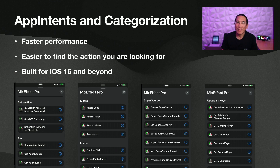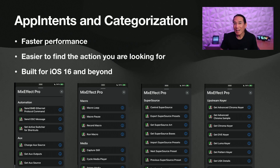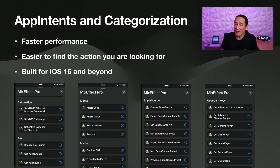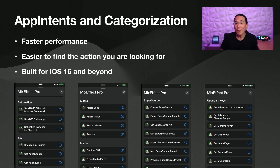Let's talk about what App Intents give you. The first thing is faster performance. The second thing is categorization. Now I'm able to categorize the Intents that you see in the Shortcuts application. So now if you go to the MixEffect section, you'll see all the actions organized. There are some actions that you can't organize, like the ones called the predicate filtering actions.